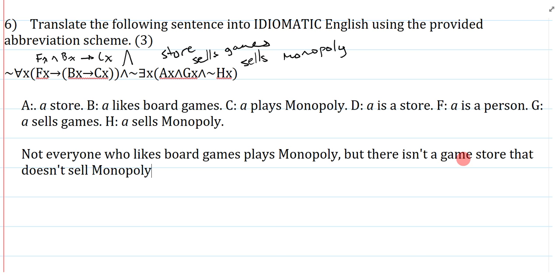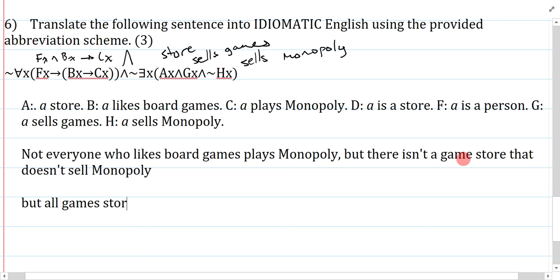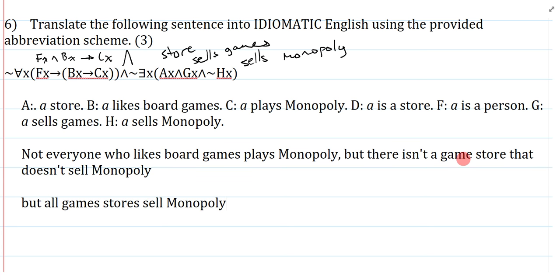To make this idiomatic: 'but there isn't a game store that doesn't sell monopoly.' You could state this in a variety of ways — 'there is no store that sells games that doesn't sell monopoly,' or even 'but all game stores sell monopoly,' which is perfectly logically equivalent and actually a nicer way to do it. I just did six questions — exactly what was on a test for single-place predicate logic symbolization. You should look at this and say this is totally doable in 20 or 25 minutes. Good luck.